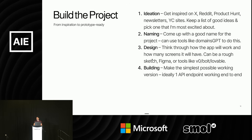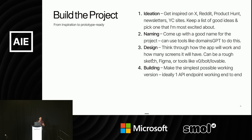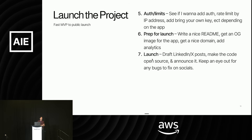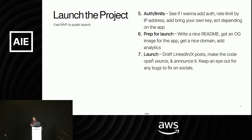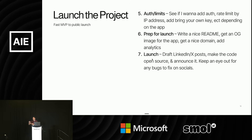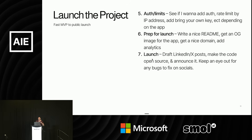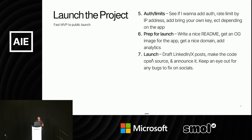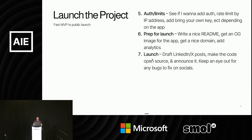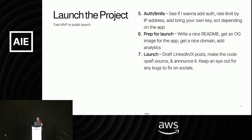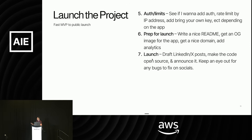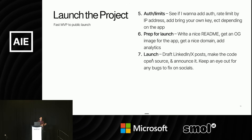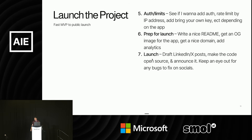Then I go about building the actual app — trying to make the simplest possible working version. I always try to shoot for like one API endpoint, very very simple. Step five is once I have a working prototype, I start thinking through authentication and limits: how expensive is this, how many uses do I want to give each person per day, do I want to add authentication, do I want to add bring-your-own API key. Step six is prepping for the launch: getting a nice OG image, getting a domain, adding analytics, and writing a nice README since everything I do is open source.